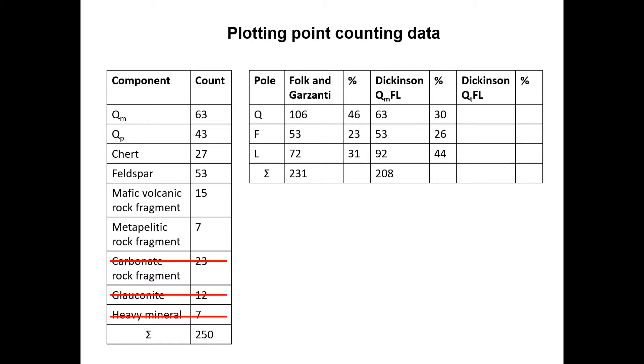For the Dickinson QT-FL plot, we sum up all quartz grains, including monocrystalline quartz, polycrystalline quartz, and chert, which gives us 133 counts of Q. Again, 53 counts of F and 22 counts of L. The new sum is 208 as well. Let's transform these into percentages: 64% of QT, 25% of F, and 11% of L.